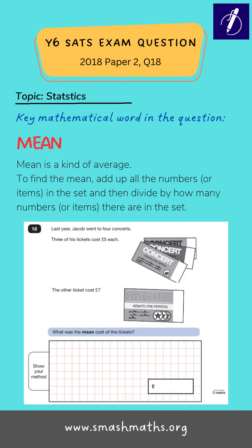To calculate the mean, we first need to add up all the amounts — or rather the price of each ticket — and then divide by the number of items, or in this case the number of tickets.